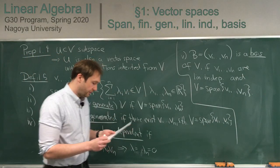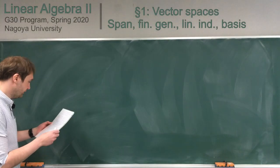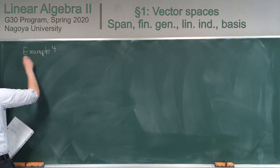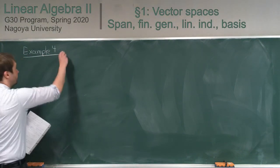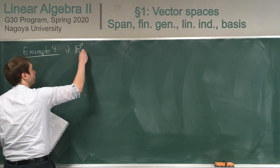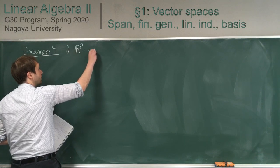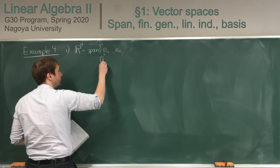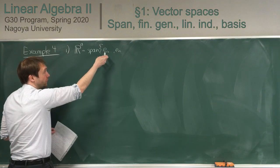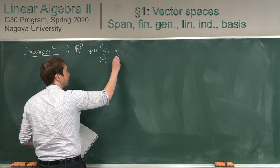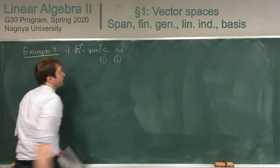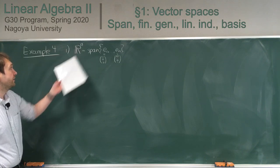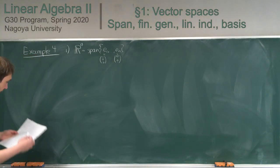Now example number 4. Rn is finitely generated because it is the span of the vectors e₁ up to eₙ, where e₁ has a 1 in the first position, e₂ has a 1 in the second position, and eₙ has a 1 in the last position. These are a basis of Rn, so in particular Rn is finitely generated because we can find finitely many elements which span it.